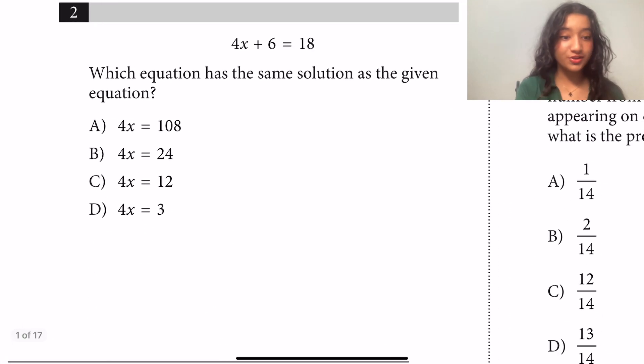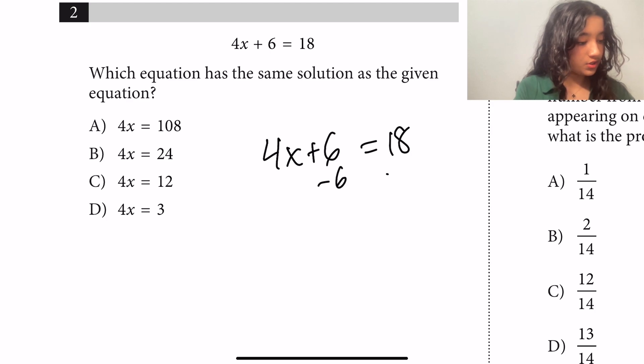Okay question two: which equation has the same solution as the given equation 4x plus 6 equals 18? So first we can subtract 6 from both sides, so doing that we get 4x equals 12.